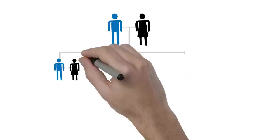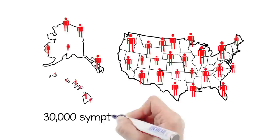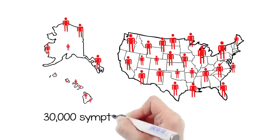HD is known as the quintessential family disease because every child of a parent with HD has a 50-50 chance of inheriting the faulty gene that causes Huntington's disease. Today, there are approximately 30,000 symptomatic Americans and more than 200,000 at risk of inheriting the disease.